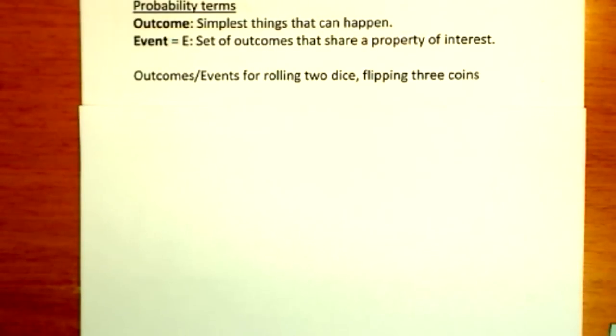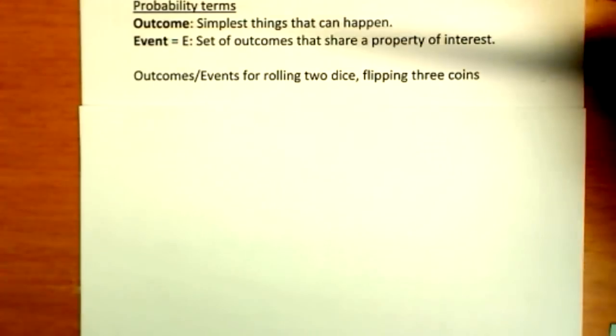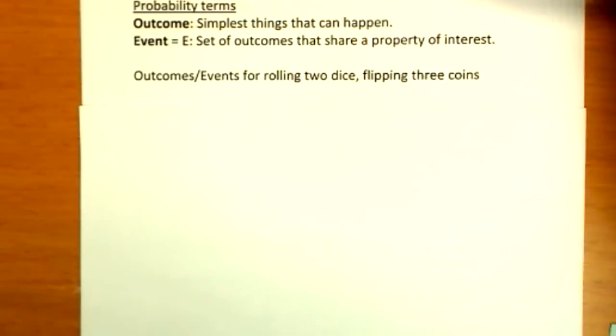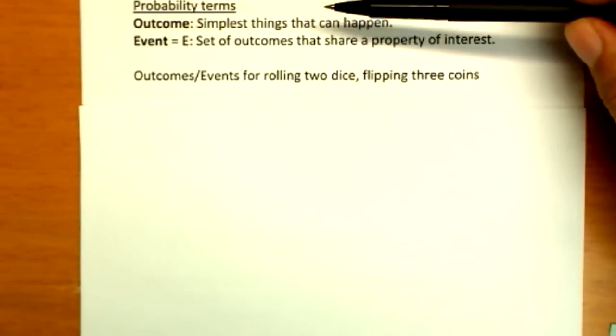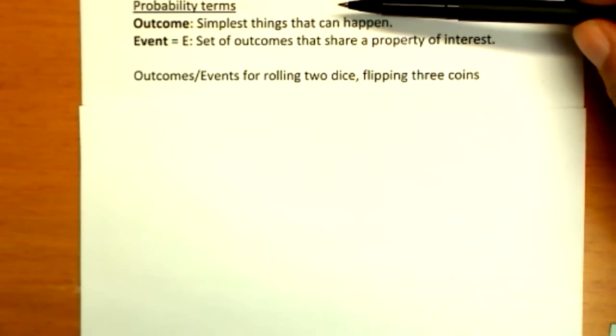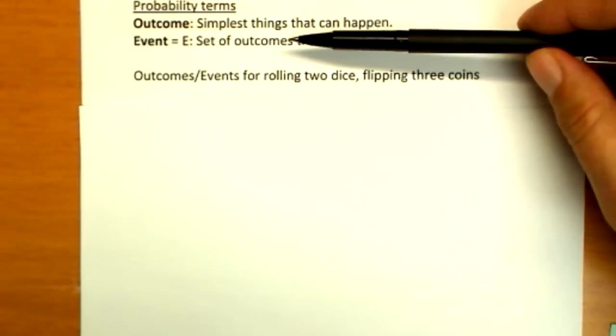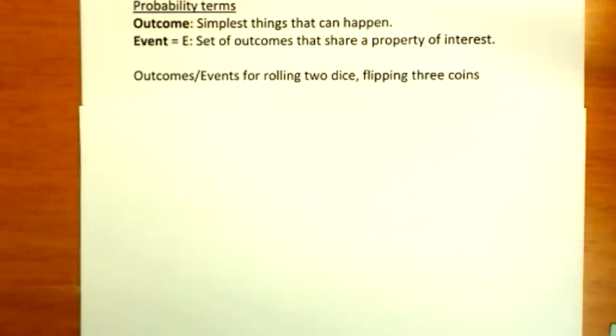We're going to start by defining a few probability terms. Probability is the mathematics about things that are not certain. That's an interesting history we're going to get to a little bit later. Let's start off with just a few definitions we need. First off is outcome. An outcome is the simplest thing that can happen. An event is a set of outcomes that share some property of interest.